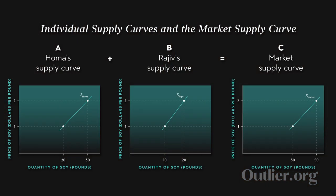We can look at this visually by considering a market with two producers and seeing how we sum up their individual supply curves to get the market supply curve — a horizontal summation, just as in the case of demand. Looking at the supply of soy with two farmers, Homa and Rajiv: at a per pound price of $1, Homa is willing to supply 20 pounds and Rajiv 10, giving a total market supply of 30. When the price increases to $2, Homa supplies 30 pounds and Rajiv supplies 20, giving a total supply of 50.